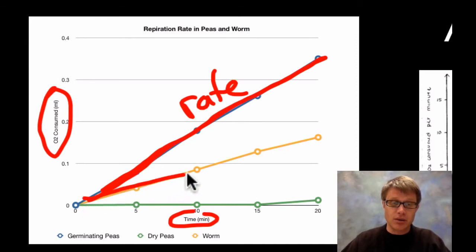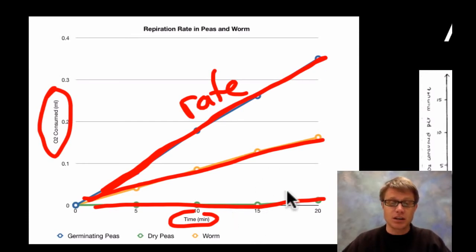We'll find that that's a greater rate than that of the worm and a greater rate than that of the non-germinating peas. And that's because these ones are not activated. They're not doing cellular respiration. If we were to soak them in water then they would start to activate and start to actually do those things.